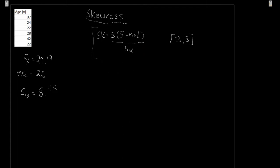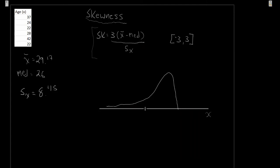What exactly is skewness? Let's visualize it. Take some distribution — a tail carries off to the left, then a big hump, then it stops. If we think about our measures of position, we can identify the mode right at the peak, roughly where the most frequent observations fall.